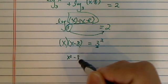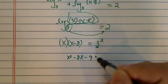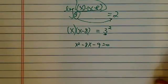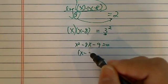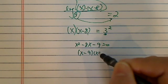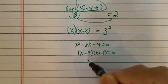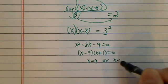From here all you have is a regular second order equation. Factoring is x minus 9, x plus 1 would give you the answer x equal to 9 or x equal to negative 1.